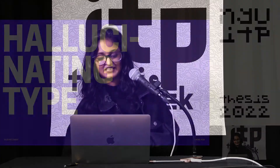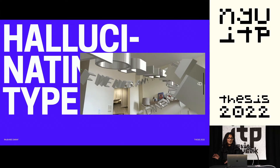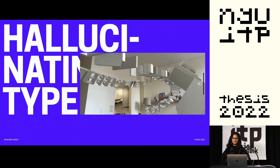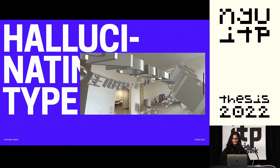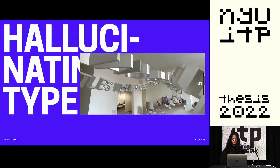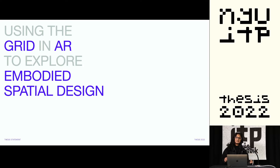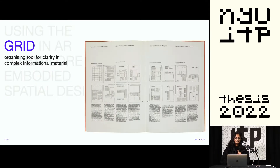Hi, I'm Rajshree and I've been hallucinating type for the past few months. By that I mean I'm experimenting with typography and augmented reality. Before I get to that, my research statement is: how can I use the grid in AR to explore embodied spatial design? Stay with me, I'll explain.